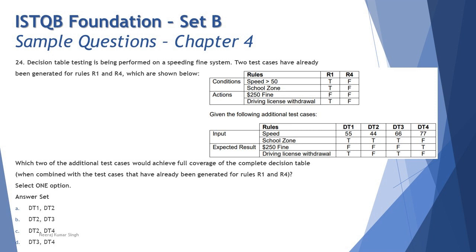In the second table, we have four different other possibilities which you are looking to pick up, and the only thing we have to pick up is just two more test cases because we got two out of four. They have given you choices as four different options: DT1, DT2, DT3, and DT4, and they're asking which are the other two tests which you can actually pick to complete the table. Which two of the additional test cases would achieve full coverage of the complete decision table when combined with the test cases already generated for rule 1 and rule 4?